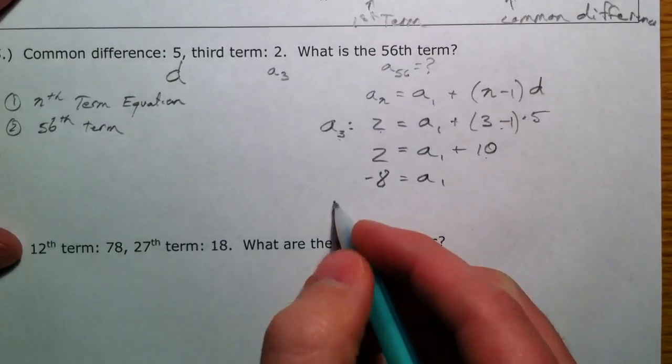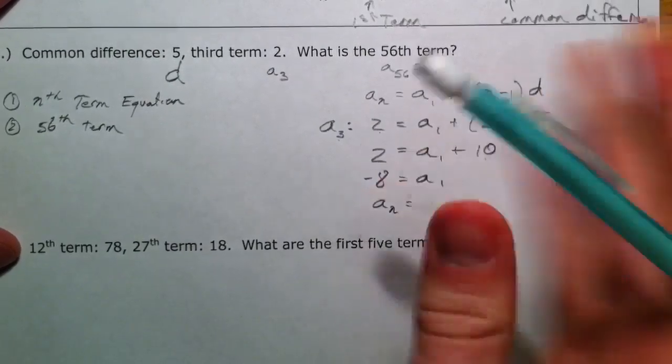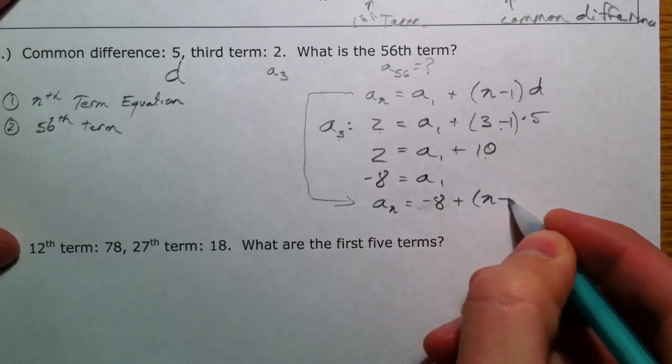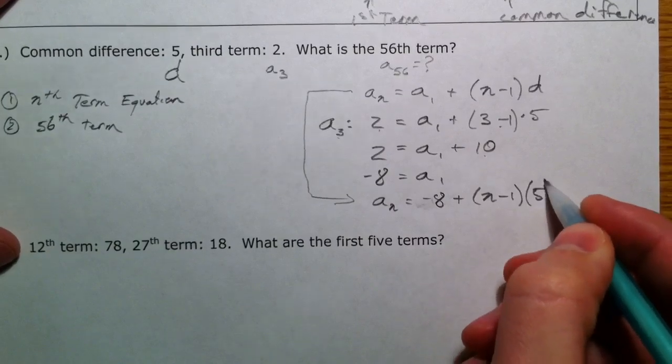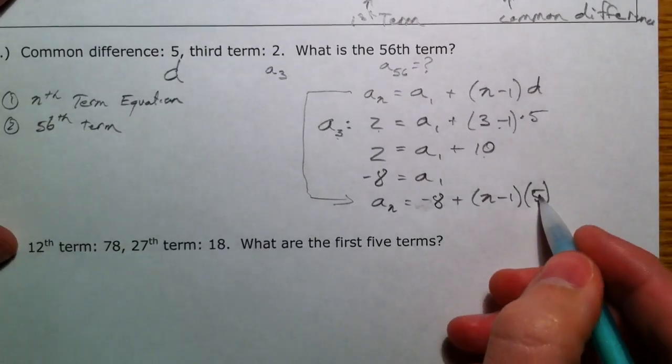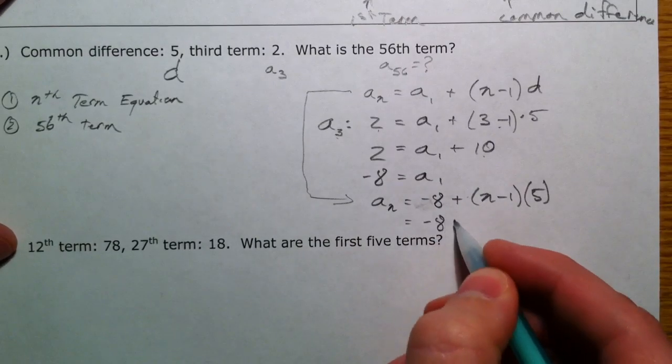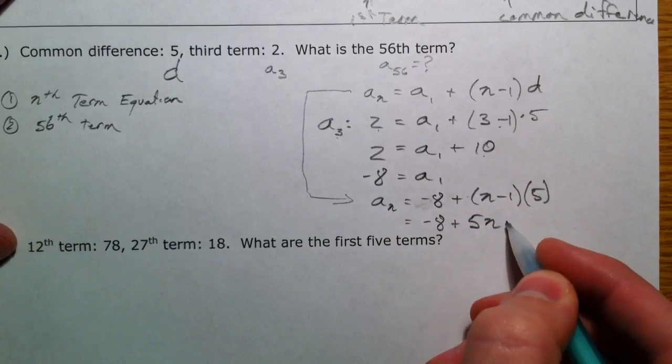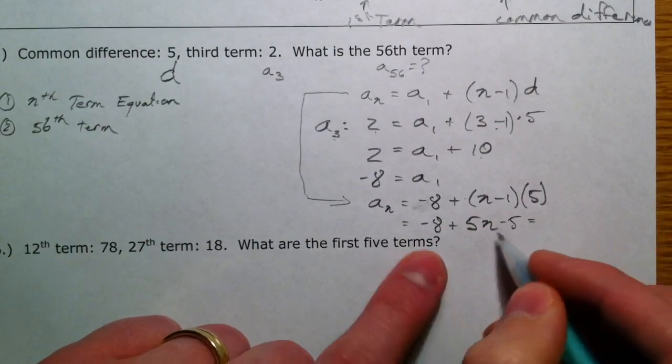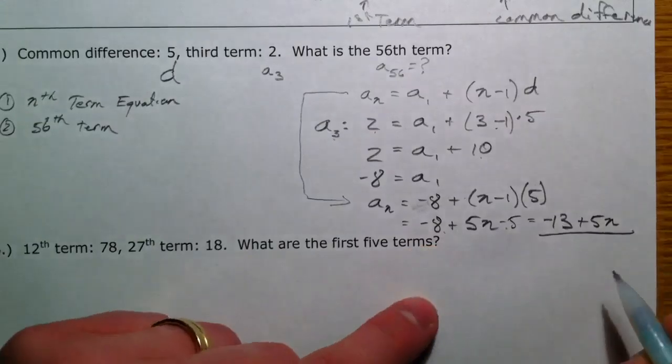So then our equation, a sub n is equal to a sub 1, which is negative 8, and what I'm doing is I'm going to take this and actually plug in everything we know. Negative 8 plus n minus 1 times d, which is 5. The nth term is negative 8 plus 5n minus 5, which simplifies to negative 13 plus 5n. So that's our nth term equation.